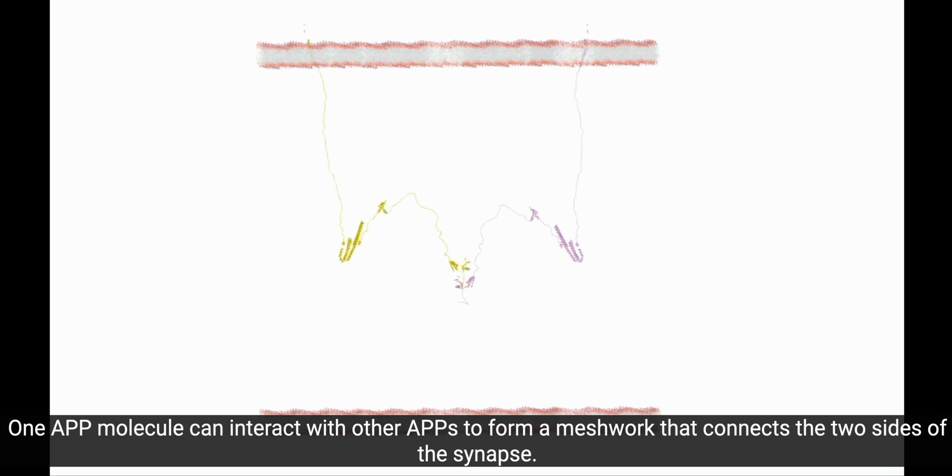One APP molecule can interact with other APPs to form a meshwork that connects the two sides of the synapse.